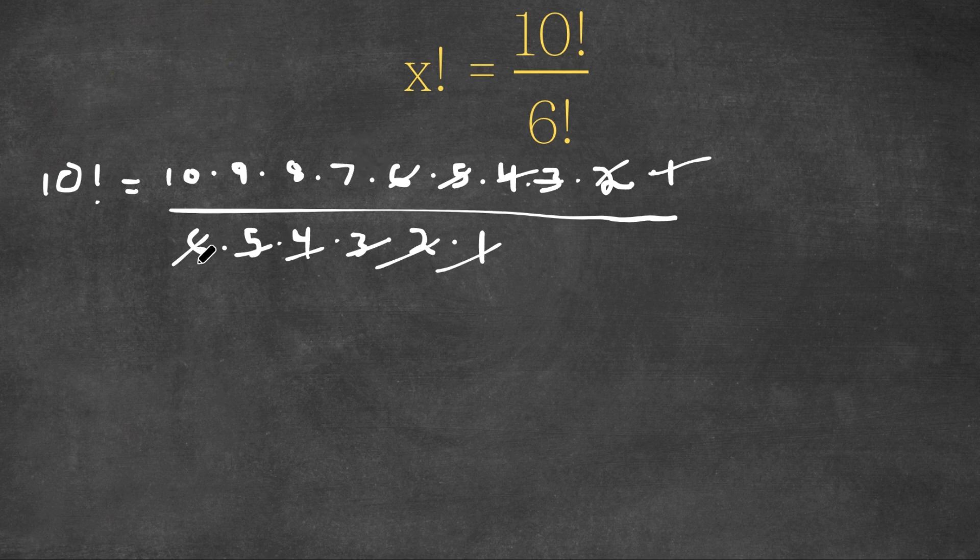So now, all we're left with is simply 10 times 9 times 8 times 7. And this is equal to x factorial.